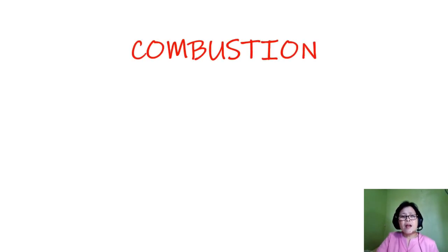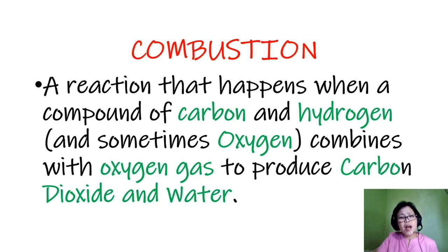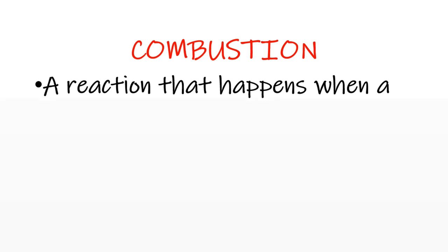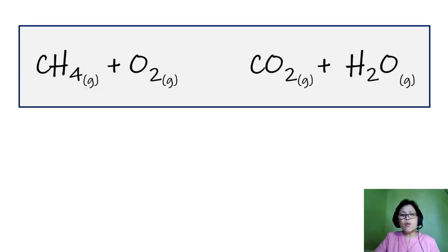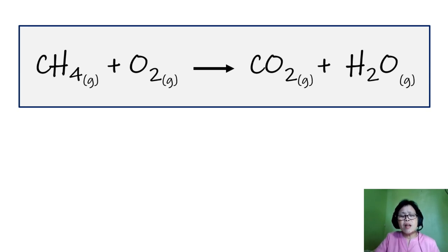Now let's talk about combustion. Combustion is basically a fancy word for burning. Combustion is a reaction that happens when a compound of carbon and hydrogen — and sometimes oxygen — combines with oxygen gas to produce carbon dioxide and water. For example, CH4, which is the chemical formula for methane, a type of natural gas, combines with oxygen gas and forms carbon dioxide and water.